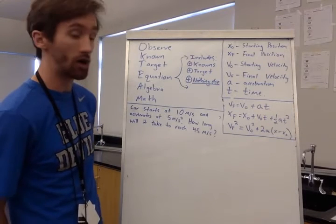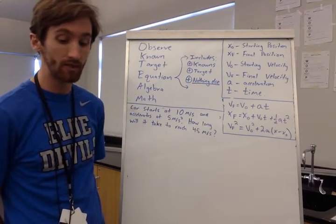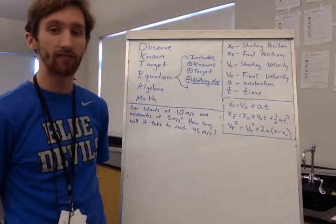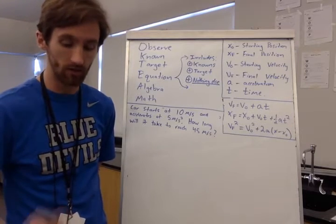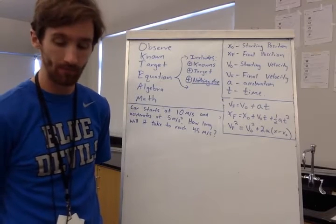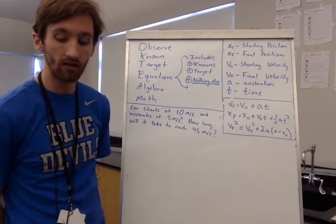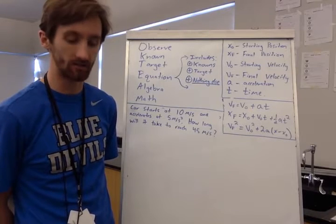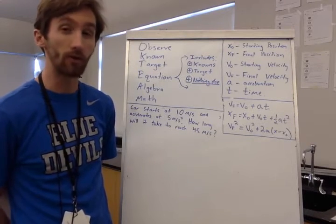It says that a car starts at 10 meters per second and accelerates at a rate of 5 meters per second squared. And you've got to add meters per second squared. That's a small typo again on that one. How long will it take the car to reach a velocity of 45 meters per second? Show the full OK team method.